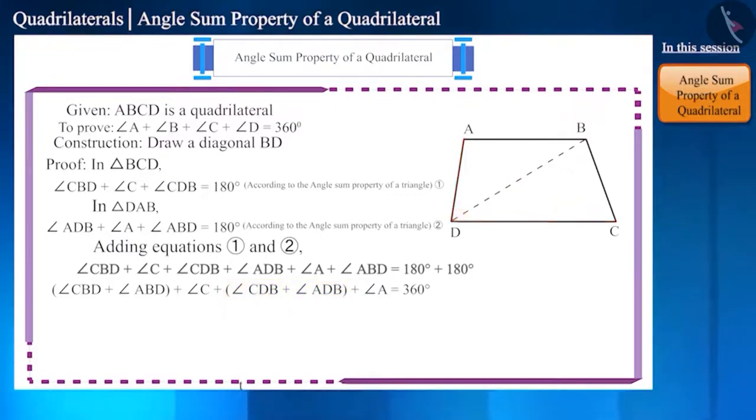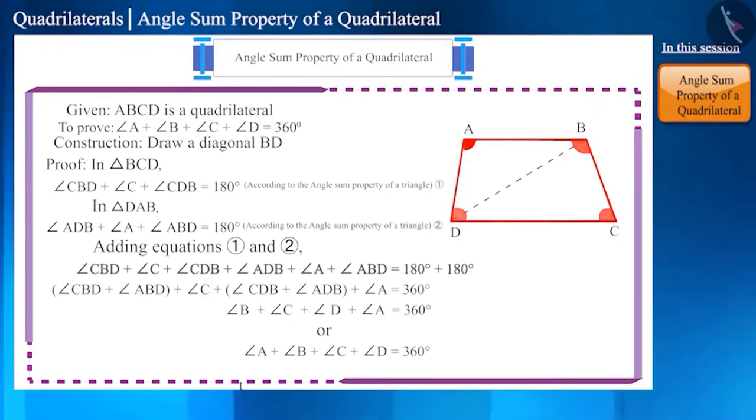We can also write it in this way: angle B plus angle C plus angle D plus angle A equals 360 degrees. Or, angle A plus angle B plus angle C plus angle D equals 360 degrees. And thus, we proved that the sum of the four angles of any quadrilateral is 360 degrees.